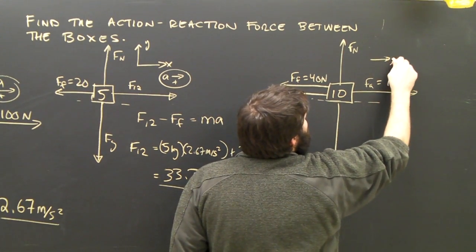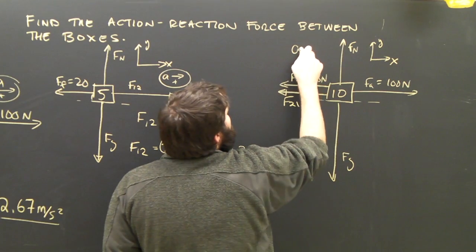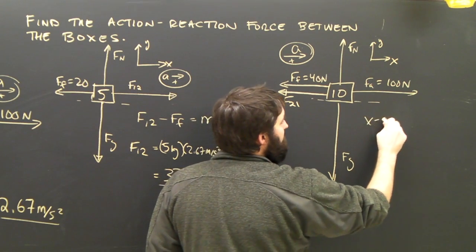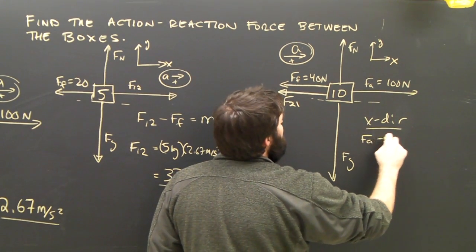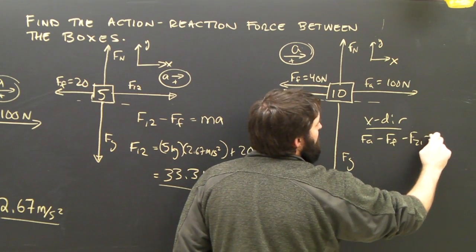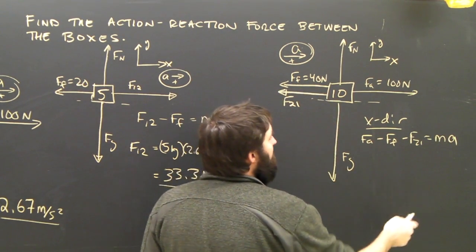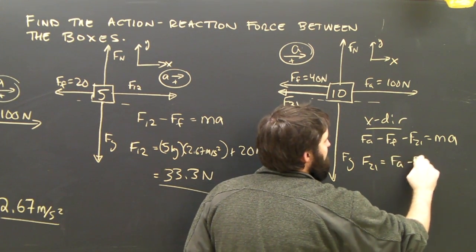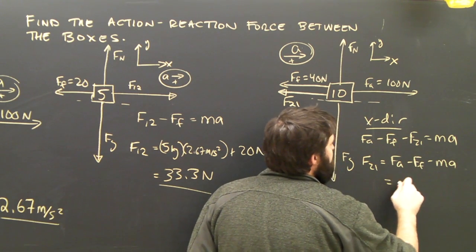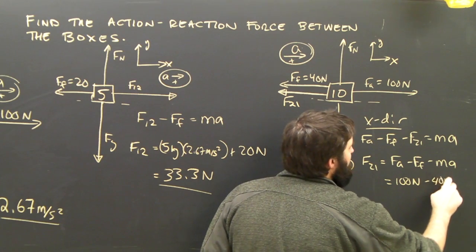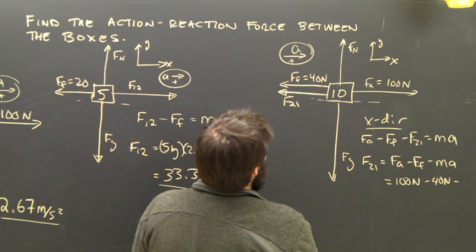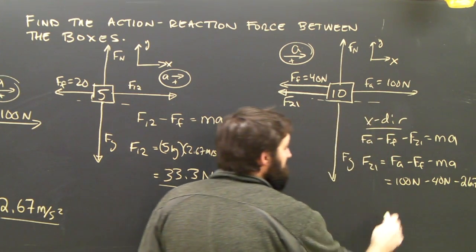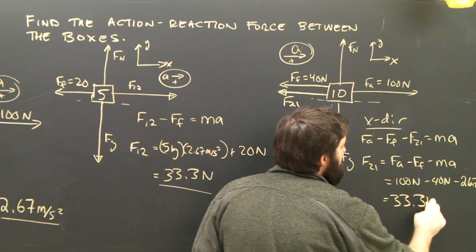Again, the acceleration is to the right, so I'll call X to the right, Y up. A is that way. Looking in the X direction, I find that FA minus FF minus F21 equals MA. I know A, I know everything. F21 equals FA minus FF minus MA, which is 100 newtons minus 40 newtons minus 10 times 2 and 2 thirds, 26.7 newtons, which works out to be 33.3 newtons.